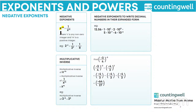Here x is any non-zero integer, whereas m is a positive integer. If you take x to the power of minus m, then you can write it as 1 upon x to the power m. For example, if you have 2 raised to minus 3, then it can be written as 1 upon 2 cube, which is equal to 1 by 8. Now let us see what is multiplicative inverse. The multiplicative inverse of x to the power of minus m equals the multiplicative inverse of 1 upon x to the power m, because these two terms are the same.